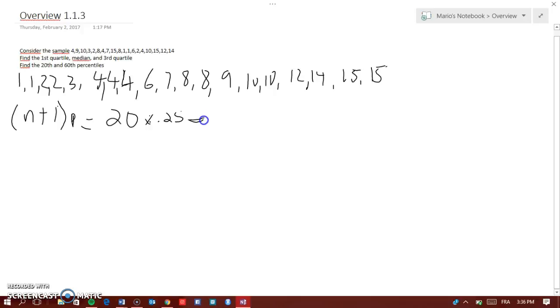And that will equal to 5. Now, this 5 actually means it is equal to x subscript 5. And when you go to the sample, you count 1, 2, 3, 4, 5, and 5 is number 3. So, your first quartile is equal to 3.